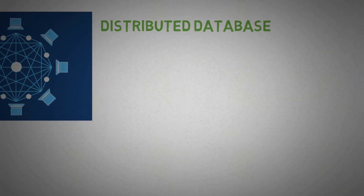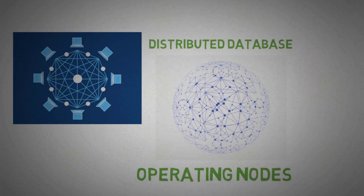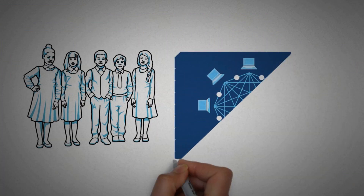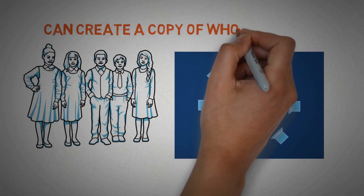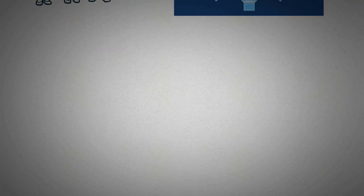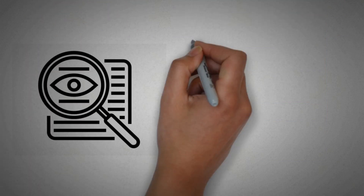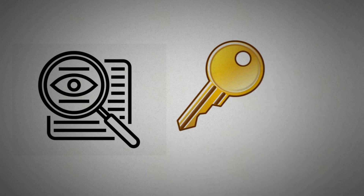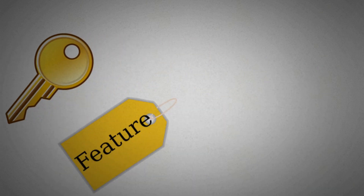Blockchain is shared among all the operating nodes, meaning every individual on the blockchain network can have a full copy of the whole blockchain. This increases transparency, and it is also one of the major key features of blockchain, which we will discuss later in this video.